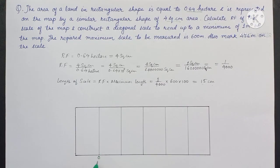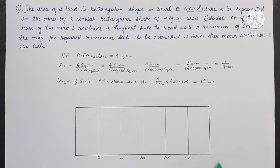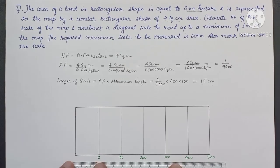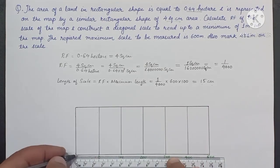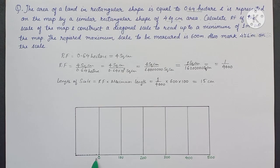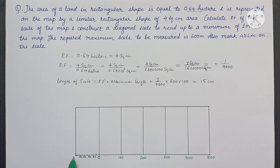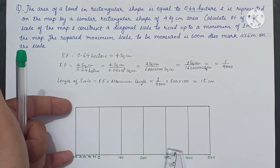Name these points 0 and 100 meters. Divide the first division into 10 equal parts, each part representing 10 meters. Name these points. Finally, divide this vertical line into 10 equal parts, each part representing 1 meter.